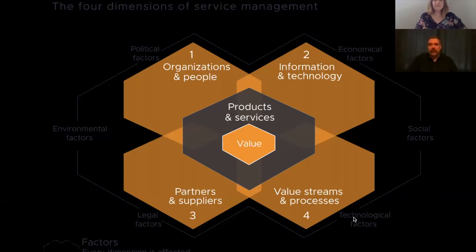Information and technology also covers how that knowledge is stored and what tools we utilize to leverage it. The partners and suppliers dimension is primarily about relationships and contracts — both strategic and tactical — with third-party organizations outside of our company. Finally, the fourth dimension, value streams and processes, deals with our internal workflows: how we actually get work done and get from point A to point B.